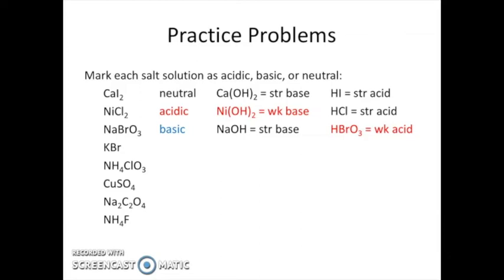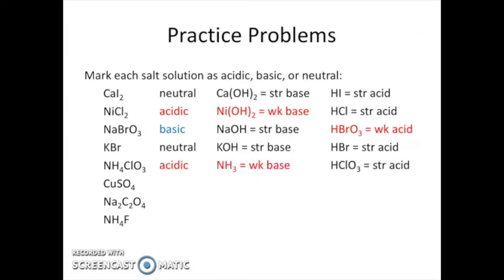Our next example is KBr. Bromide comes from HBr, a strong acid, and potassium comes from potassium hydroxide, a strong base — so that'll be neutral. Next we have ammonium chlorate: chlorate comes from chloric acid, HClO₃, which is a strong acid, and NH₄⁺ comes from the weak base ammonia — so a strong acid and a weak base, giving an acidic solution. Copper(II) sulfate: sulfate comes from sulfuric acid (strong acid) and copper hydroxide is a weak base, so it'll also be acidic.